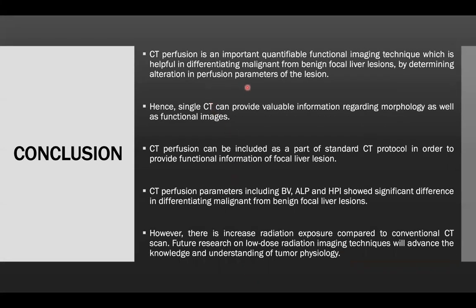Conclusion: CT perfusion is an important quantifiable functional imaging technique helpful in differentiating malignant from benign focal liver lesions by determining alteration in perfusion parameters. Hence, a single CT can provide valuable information regarding both morphology and functional images. CT perfusion can be included as part of a standard CT protocol to provide functional information of focal liver lesions. CT perfusion parameters including blood volume, arterial liver perfusion and hepatic perfusion index showed significant difference in differentiating malignant from benign focal liver lesions. However, there is increased radiation exposure compared to conventional CT scan, and future research on low-dose radiation imaging techniques will advance knowledge and understanding of tumor physiology.